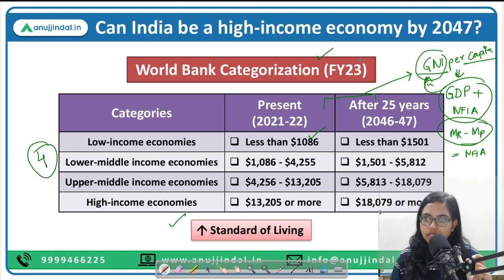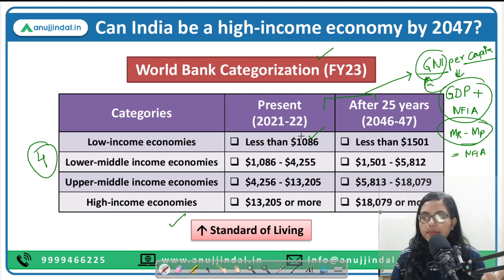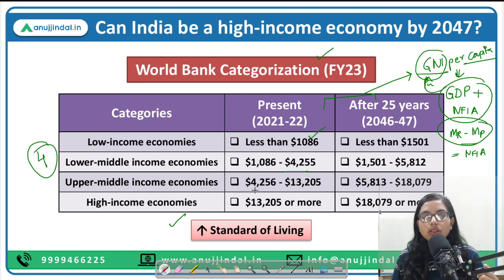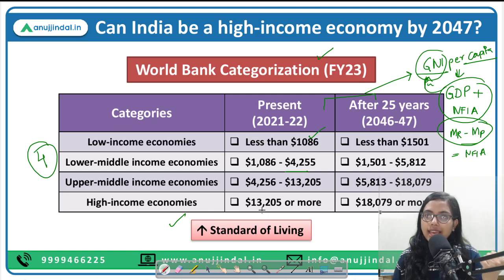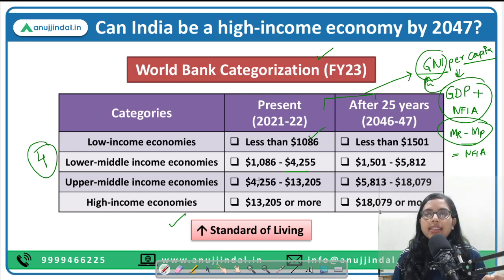So, low income economies have a GNI per capita of less than $1,086. Lower middle income countries fall within up to $4,255. Upper middle income is from around $4,000 to $13,000 per person. And high income economies are those with $13,205 and above per capita income. This is the categorization given by the World Bank.